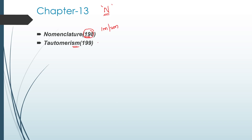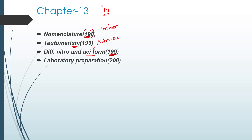Next, isomerism — tautomerism between nitro and azo form, which is very important, page 199. Difference between nitro and azo form, page 199. Laboratory preparation of nitro alkanes, page 200. Reduction of nitro alkanes, page 200.